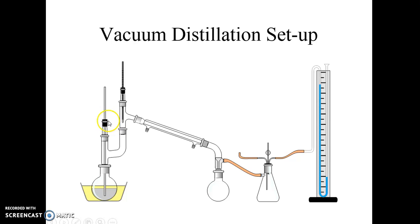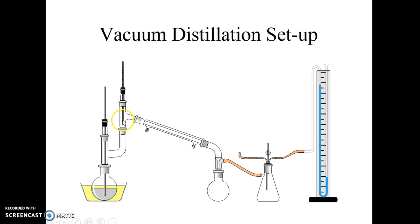This is a vacuum distillation setup for when you have a really strong vacuum — we're not going to use this setup. We're just going to use the same setup as a simple distillation but attach a vacuum hose. If you have a really strong vacuum, you have a tube with a way to control airflow — perhaps a hose and a pinch valve — so that if your vacuum gets too low, you can start leaking air into the system to control pressure. There's also what's called a Claisen head that allows two things to be attached, but we're going to skip that and put the distillation head directly into the round bottom. You'll need a thermometer and a thermometer adapter.